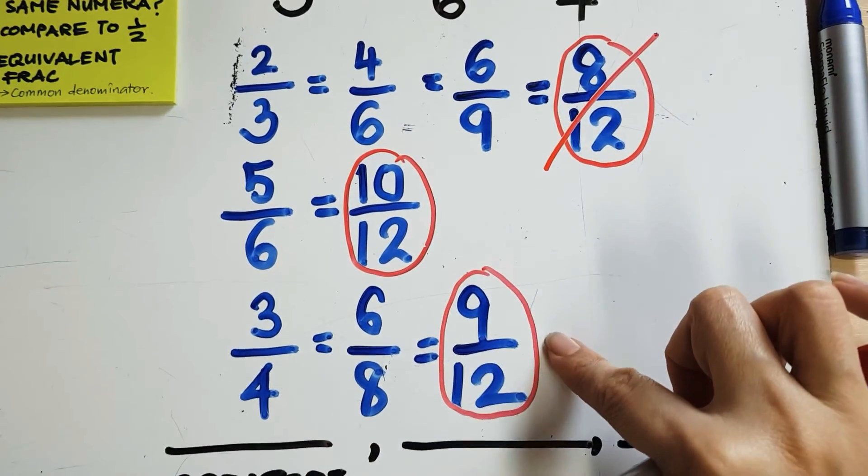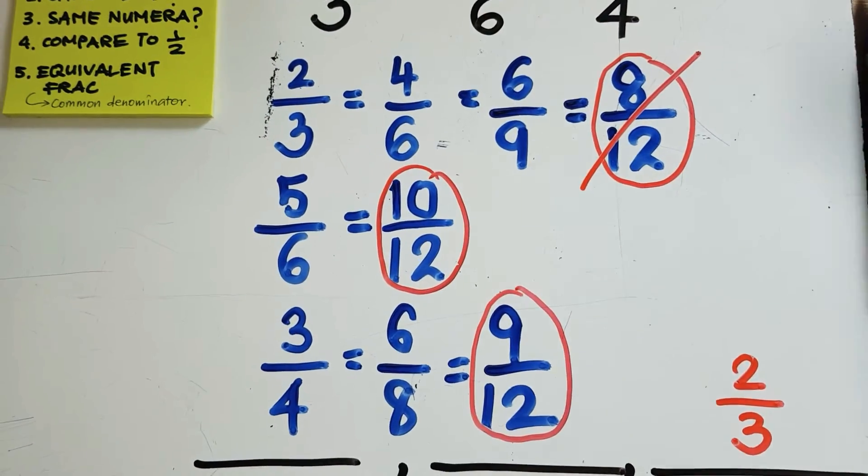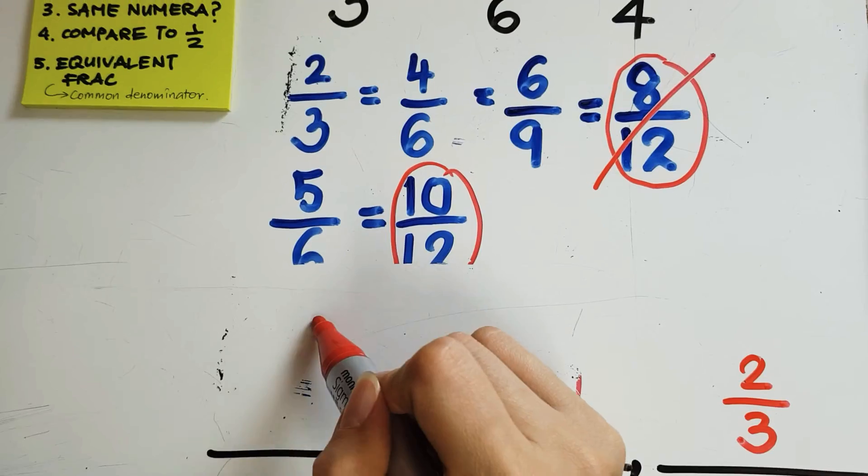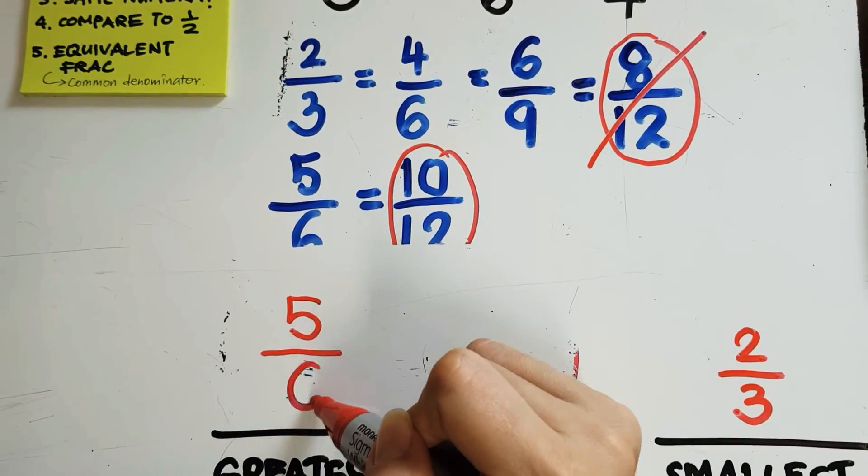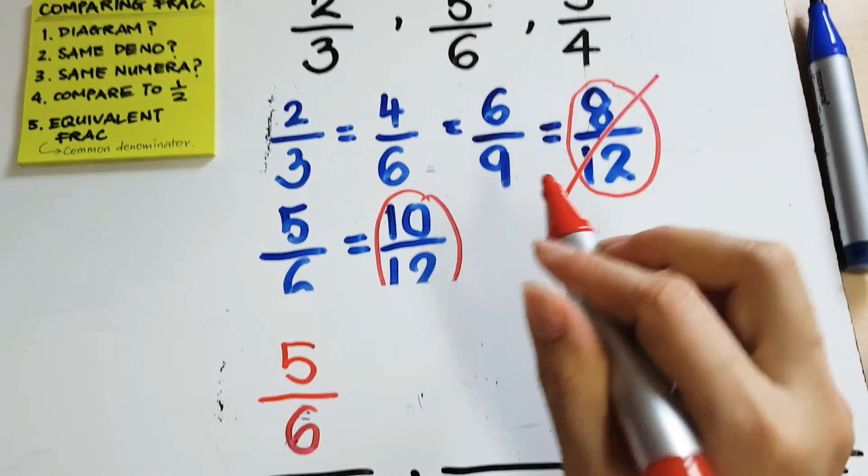10/12 is bigger than 9/12. So, I'm going to write 5/6 is the greatest. I'm going to just write there. 5/6 is the greatest. And if 5/6 is the greatest, that leaves 3/4 to be in the middle.